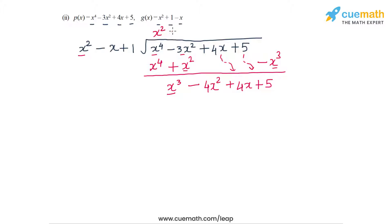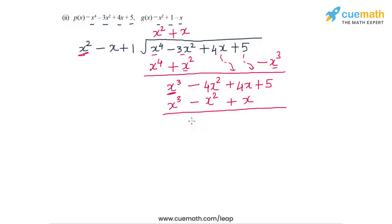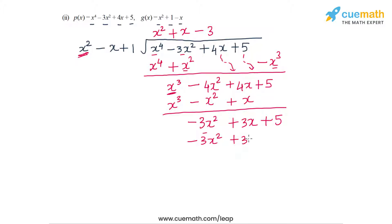The highest degree term is now x³, so the next multiplier is x. With multiplier x, the terms generated are x³ - x² + x. After subtracting, I get -3x² + 3x + 5. The third multiplier is -3, generating -3x² + 3x - 3. After subtracting again, I am only left with 8.